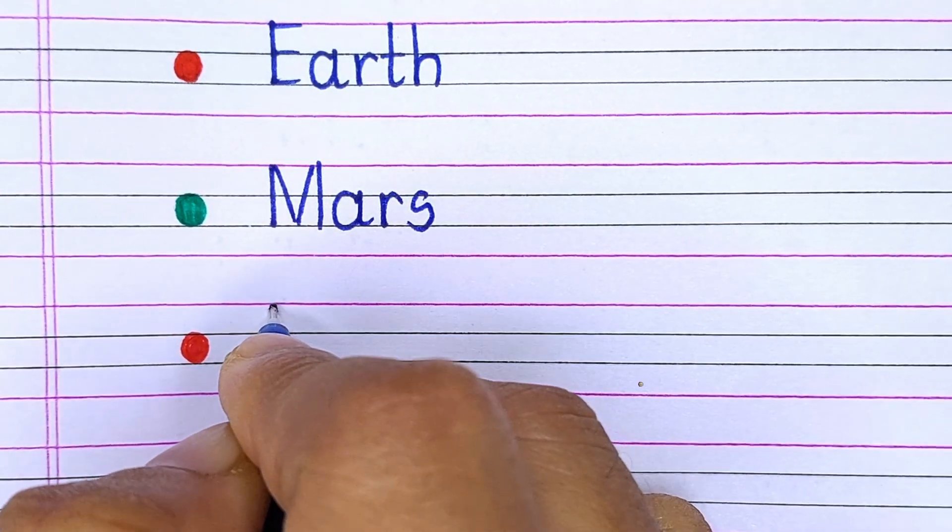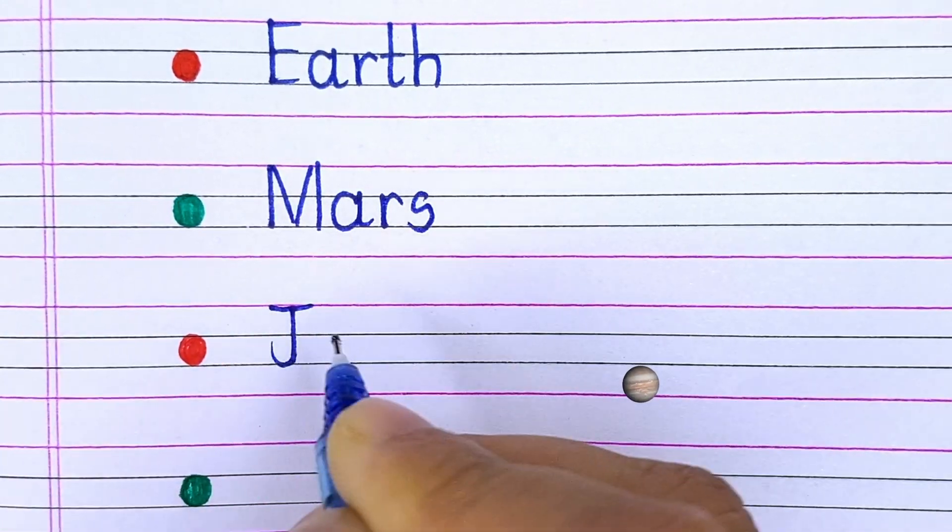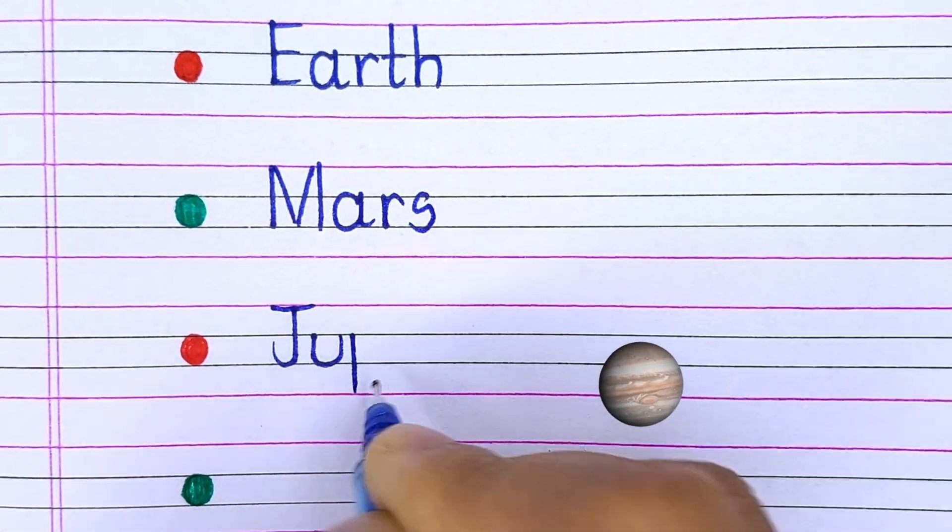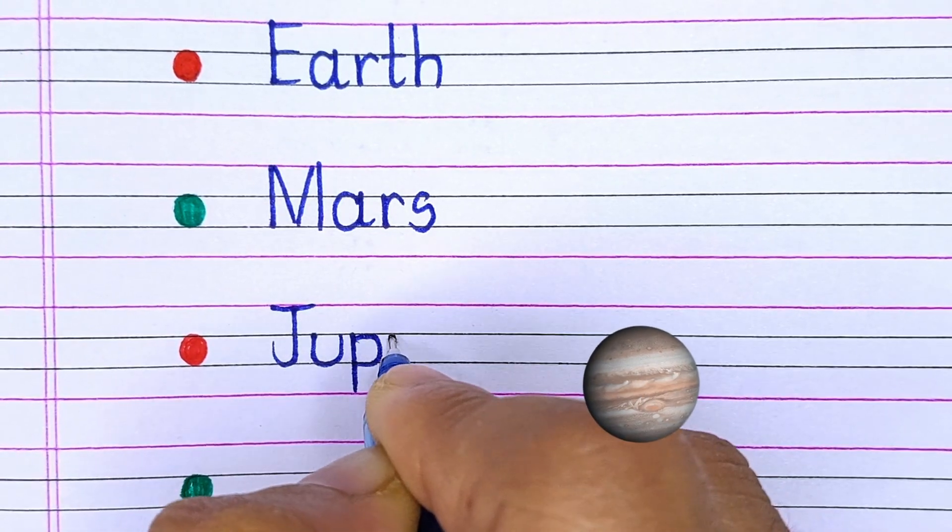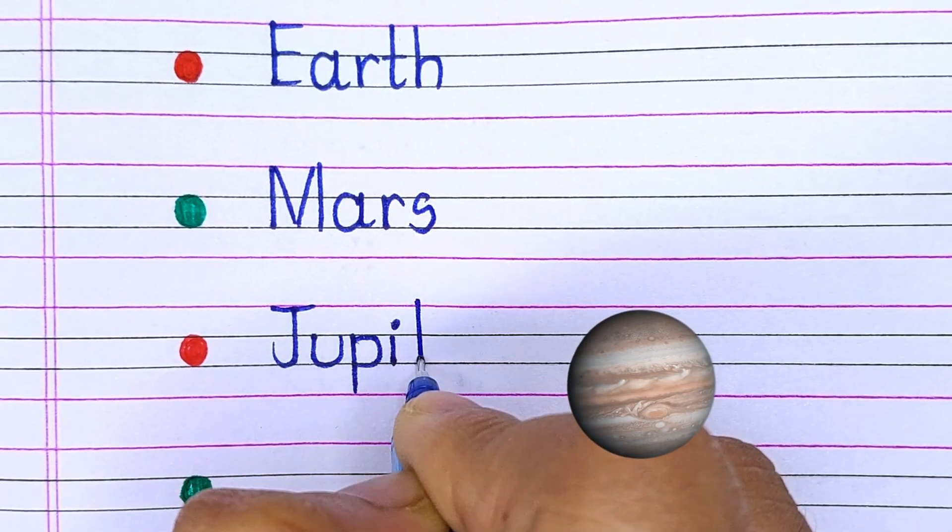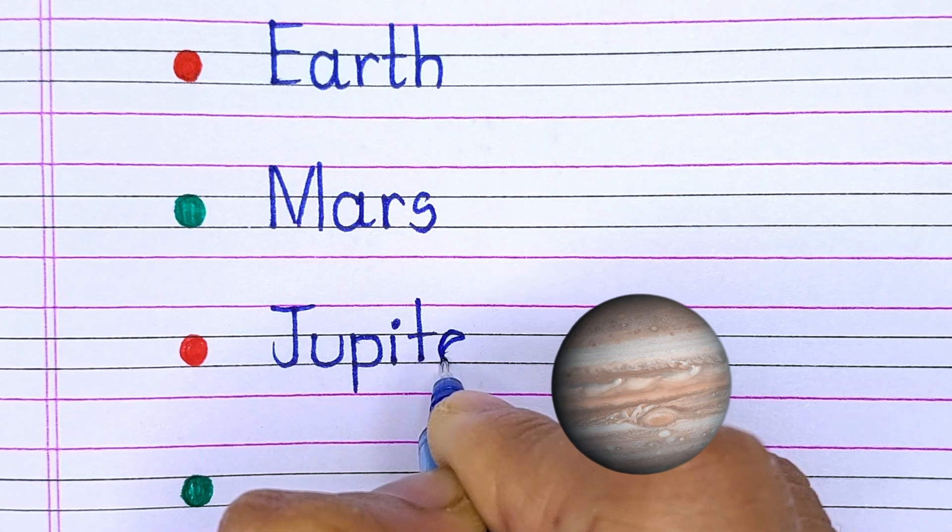The planet next to Mars is J-U-P-I-T-E-R Jupiter